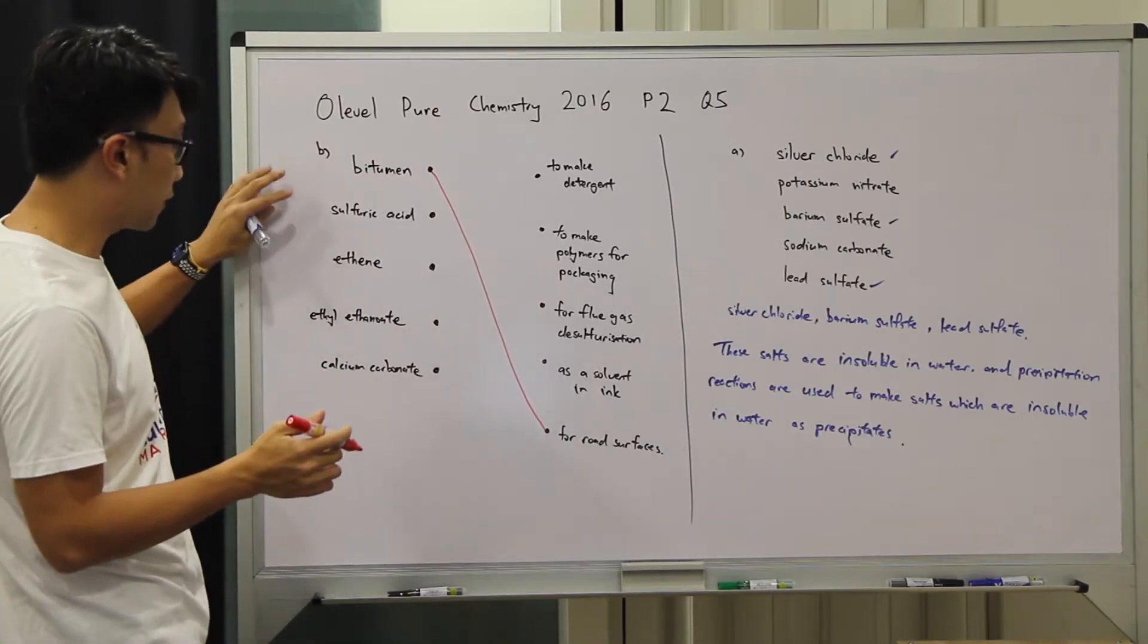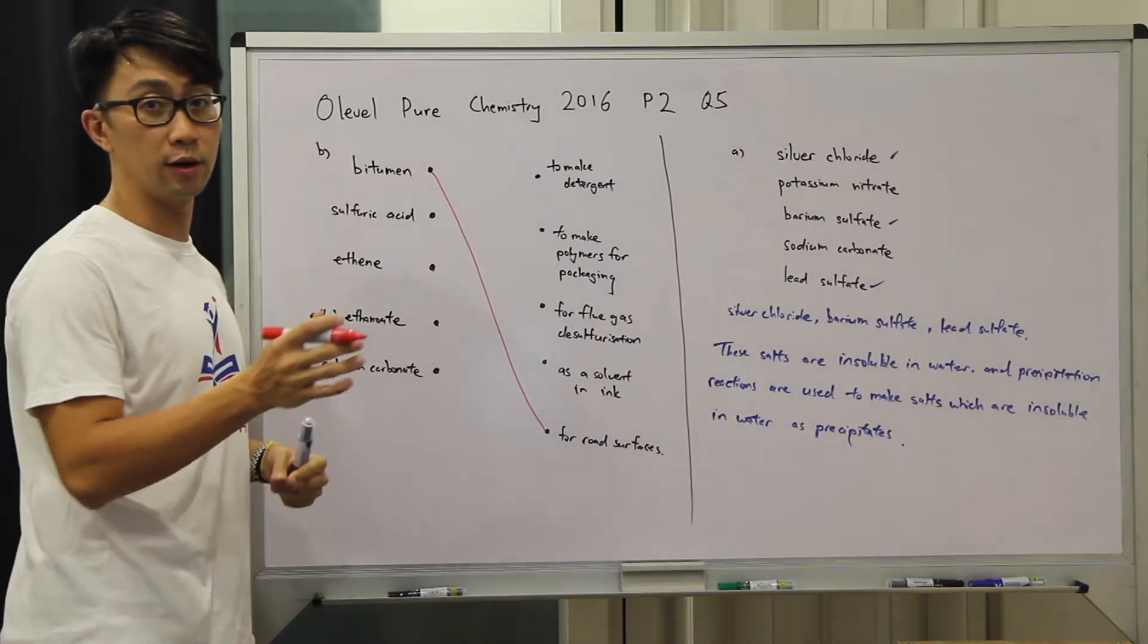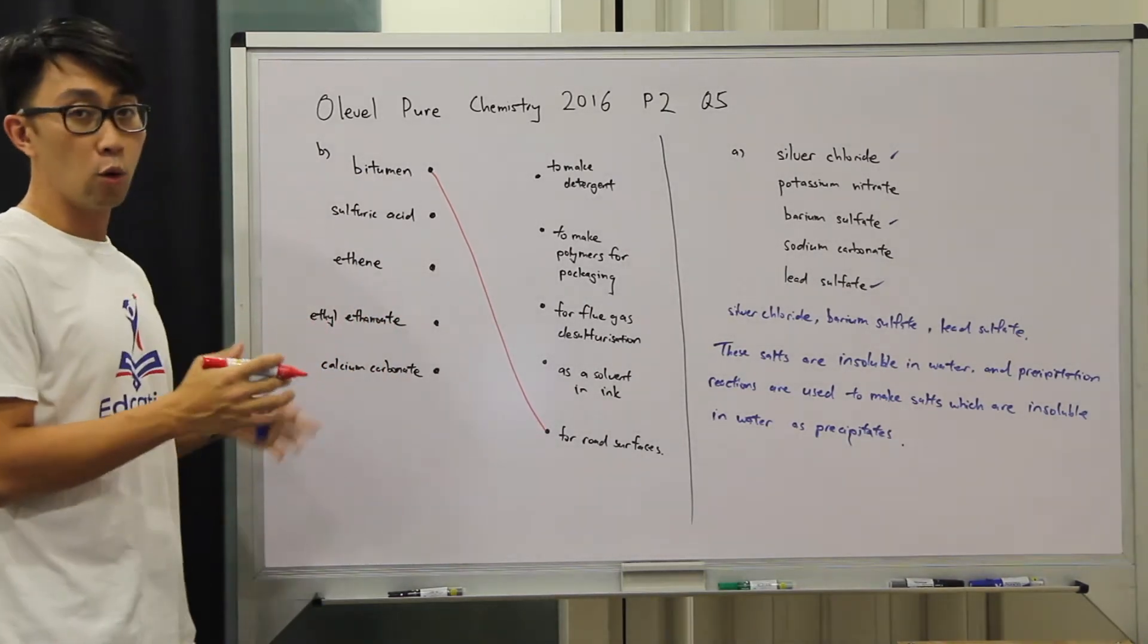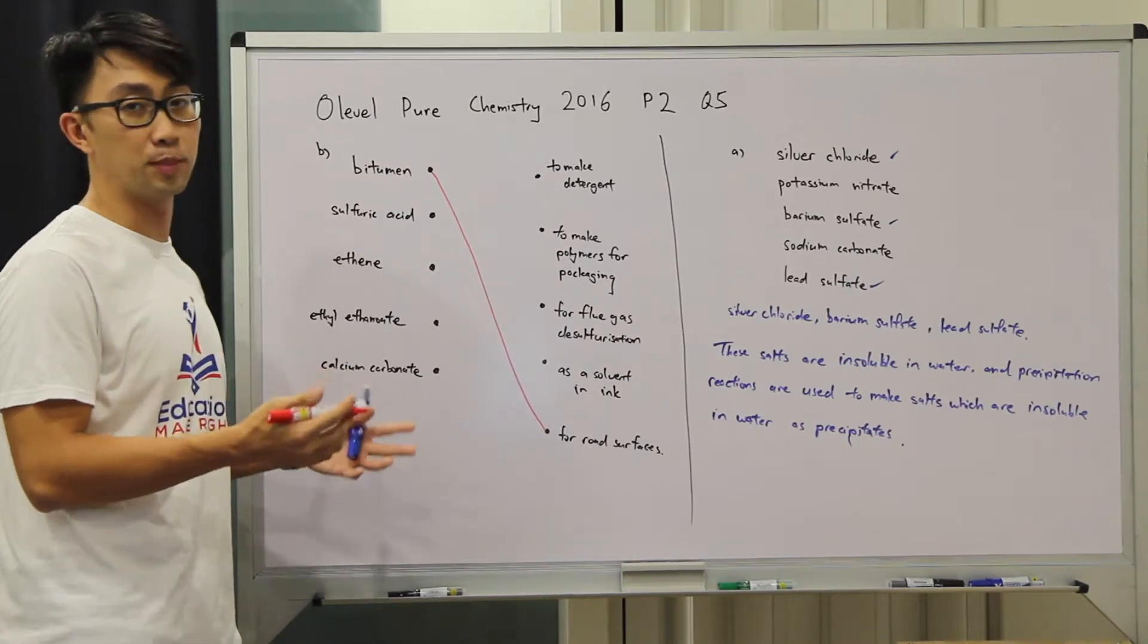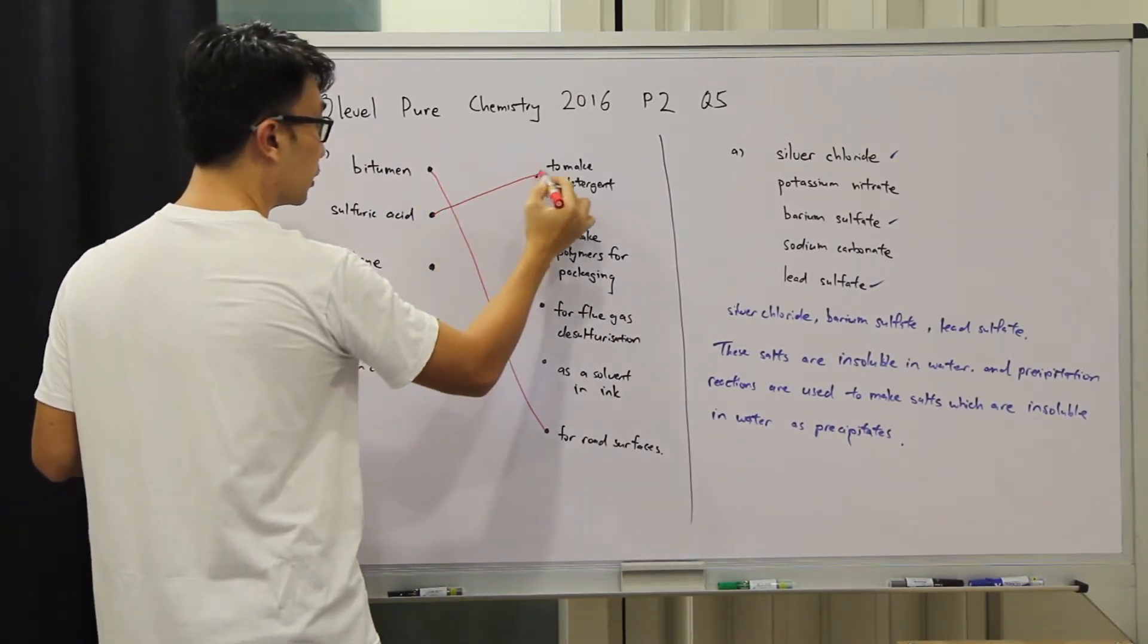Next we have got sulfuric acid. Under the acid chapter, if you have read the uses of sulfuric acid, one of them, a large percentage of it is actually to make detergent. So we'll link it here.